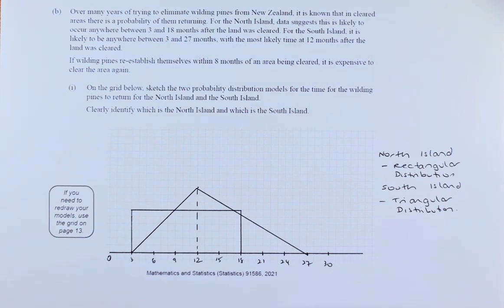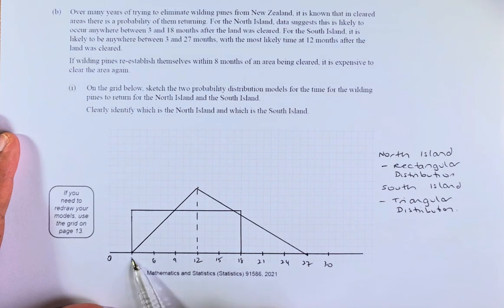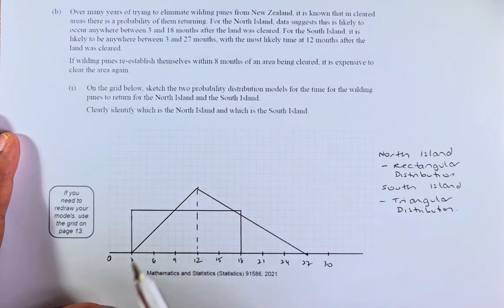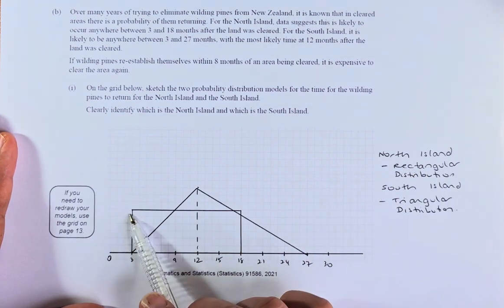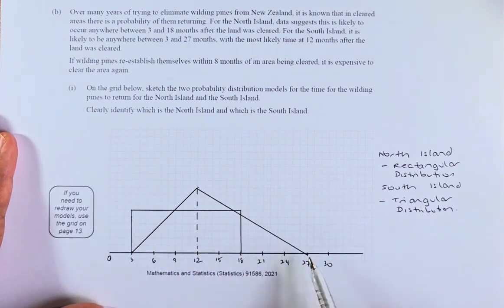For the South Island, on the other hand, it is likely between 3 and 27, with the most likely time at 12 months after the land is cleared. So this is a triangular distribution because there's a highest peak there. They start at 3, end at 27, and the highest peak at 12 — the most common number is going to be at 12. So that is the triangular distribution for the South Island. On the grid below, sketch the two probability distributions for the time for the wilding pine to return for the North and South Island. North Island is the rectangular, and the South Island is the triangular distribution.